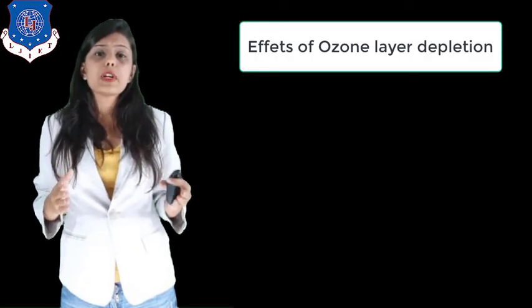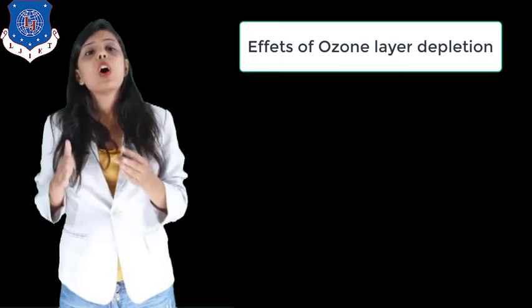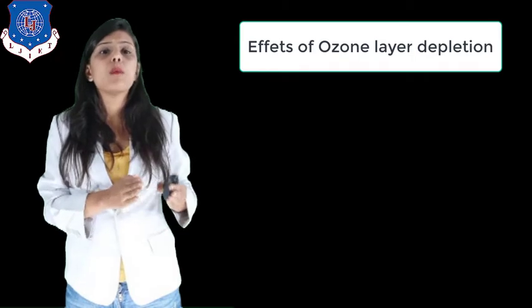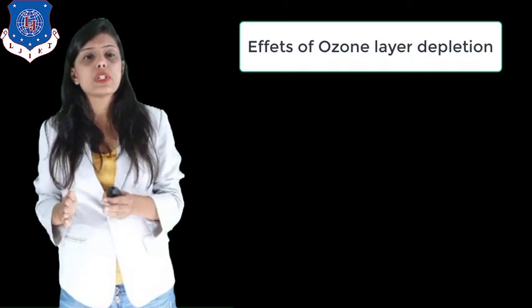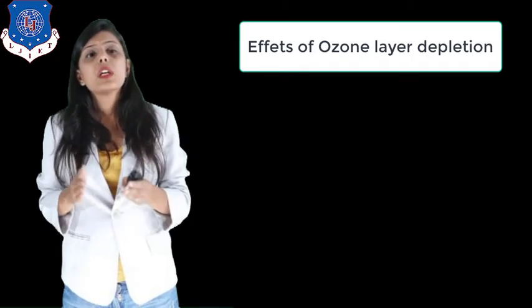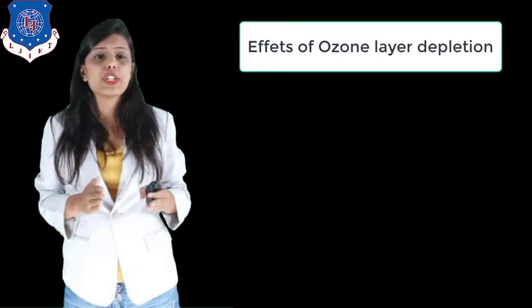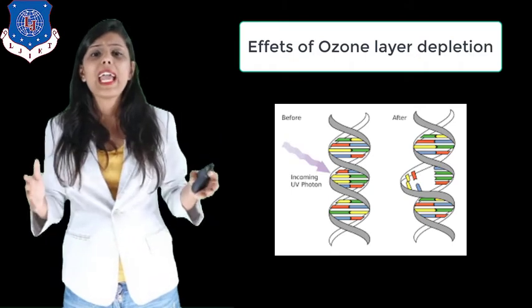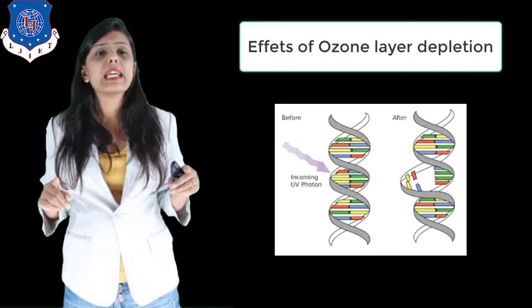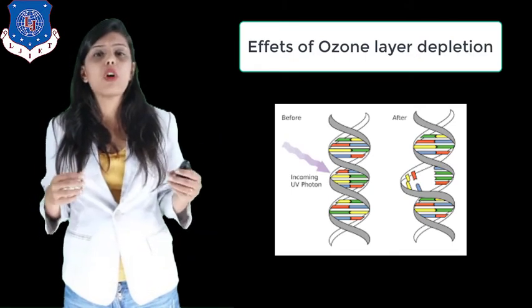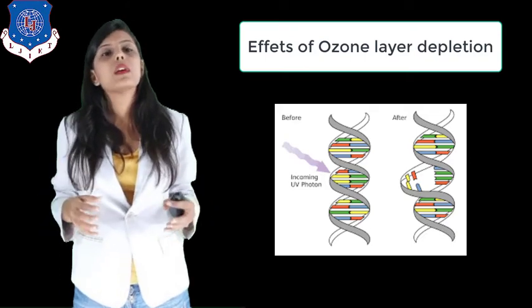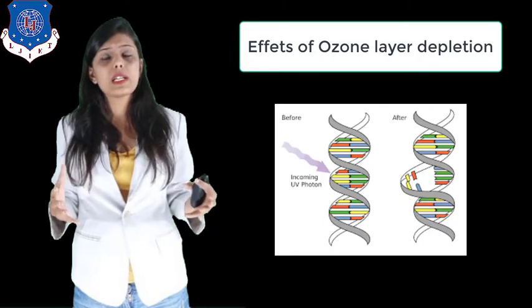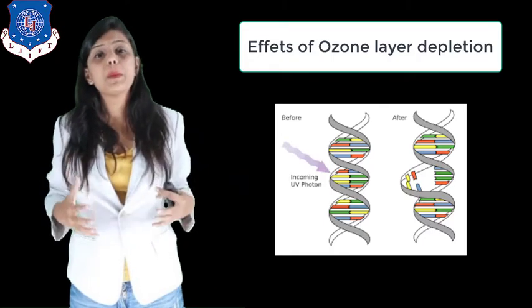The first effect of ozone layer depletion is that depletion in the stratosphere will result in more ultraviolet radiation reaching the earth. The ultraviolet-B radiation affects DNA and photosynthetic chemicals. Any change in DNA can result in mutation or cancer, causing skin cancer, which creates problems in the human body.